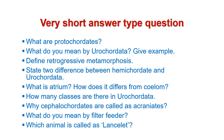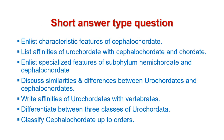The second category of questions are short answer type questions, which you have to answer in a single paragraph. The first question from this category is: list the characteristic features of Cephalocordata. Next is: list affinities of Urocordata with Cephalocordata and Chordata. Next is: list specialized features of Cephalocordata. Next is: discuss similarities and differences between Urocordates and Cephalocordates.